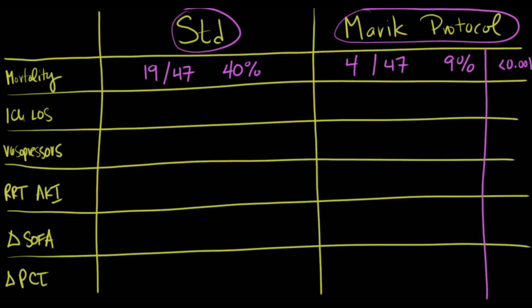Now, what about the ICU length of stay? The ICU length of stay was actually four, but it was anywhere between four and ten days in the intensive care unit. Whereas in the treatment group, it was an average of four, but the range was three to five days. And that was not statistically significantly different.